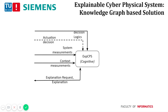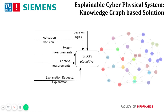The XCPS system feeds on various data from different sources. From the CPS, it requires not only data produced during execution, such as measurements, but also a blueprint and understanding of how the components work. The XCPS system also utilizes additional context information. To capture all this information as a basis for explainability, we propose a solution based on semantic technologies, in particular knowledge graphs.